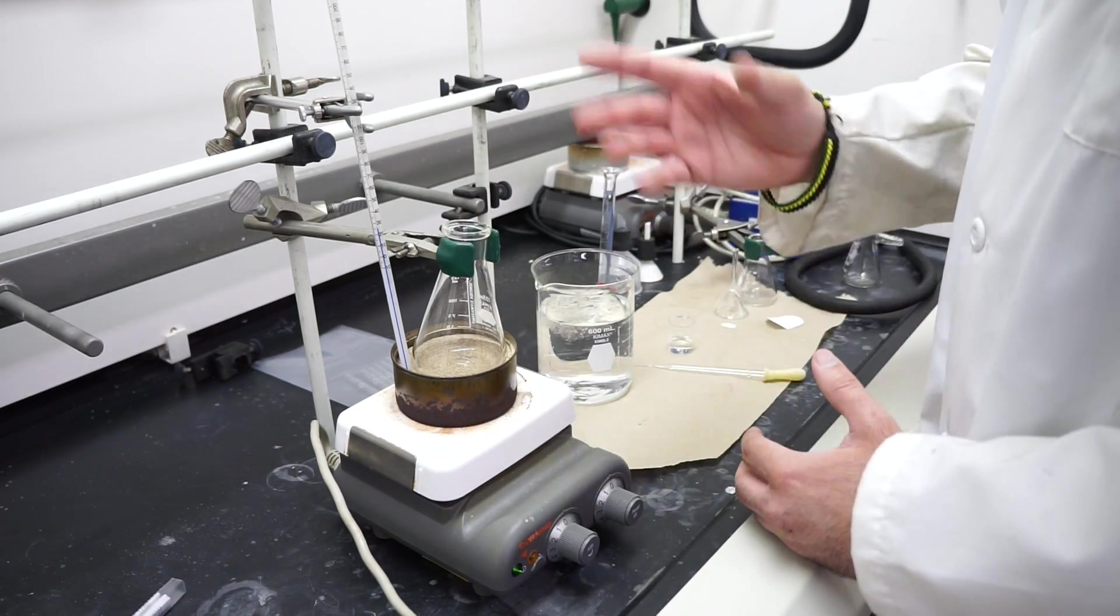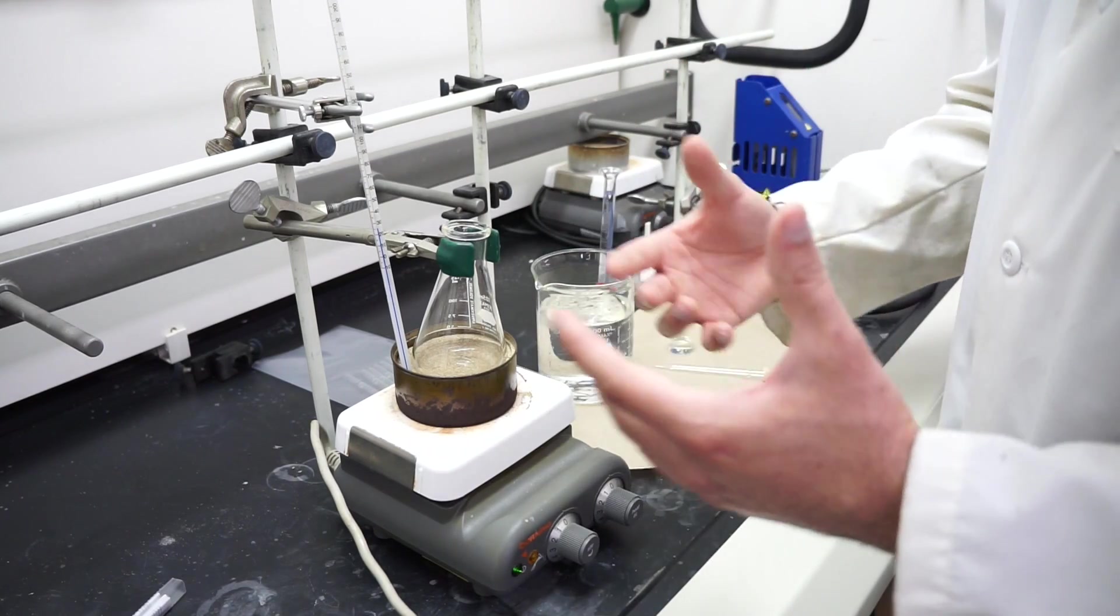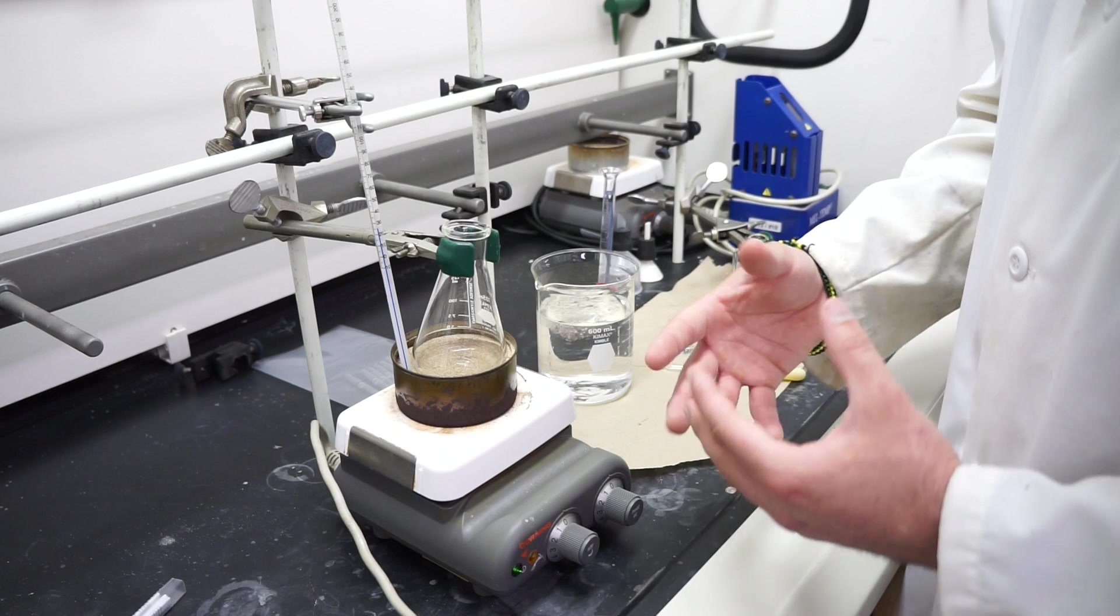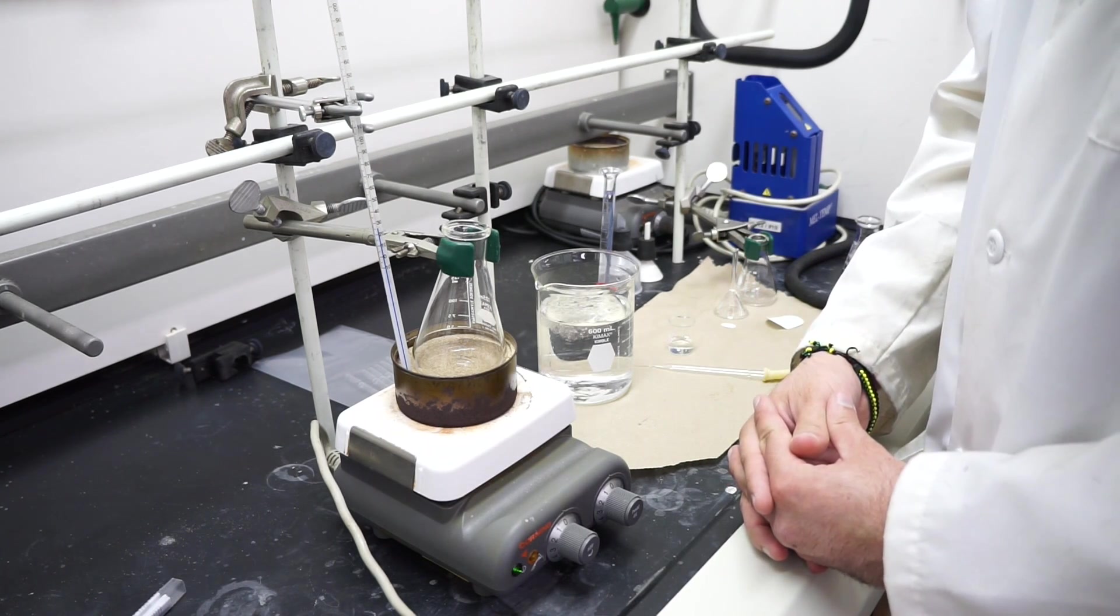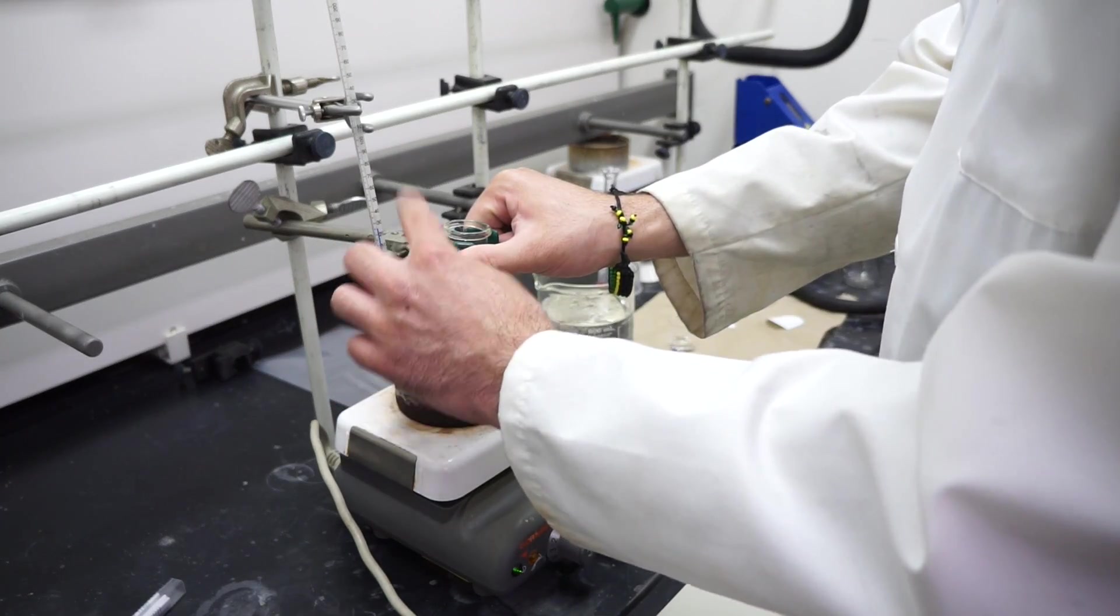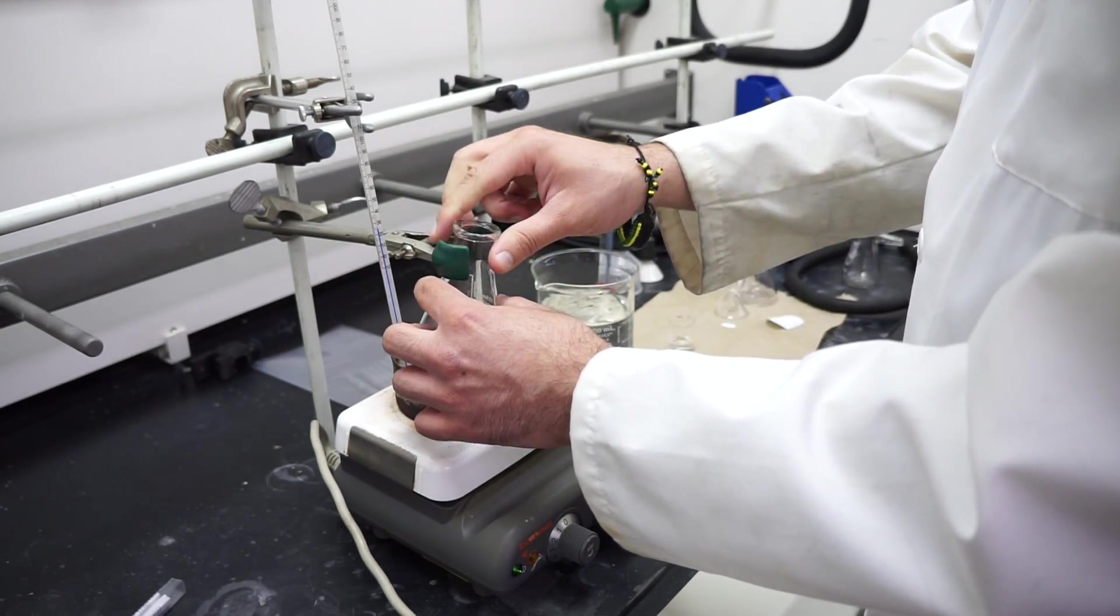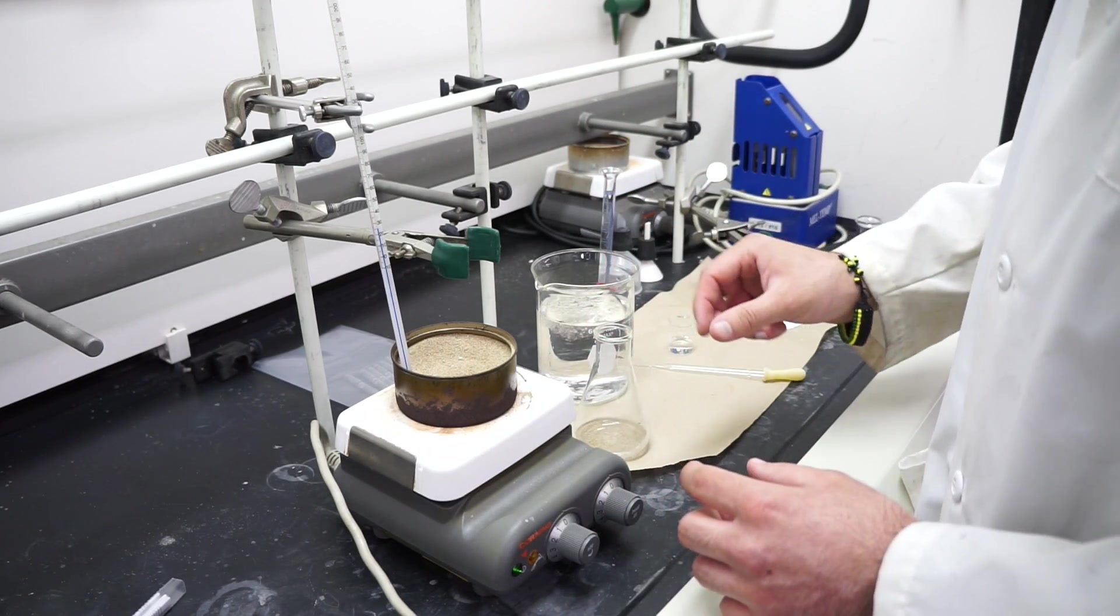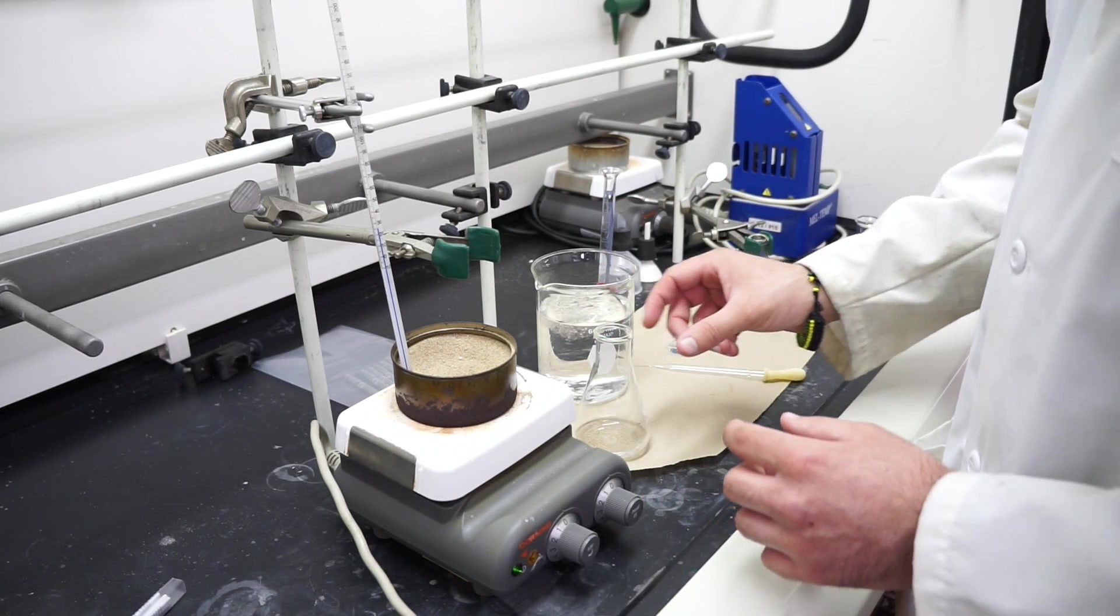You'll let it sit there and heat until as much of your product as possible dissolves or turns into liquid. From there, you're going to do a hot filtration. We'll open this clamp up, take it off the hot plate, and go over here to do a hot filtration.